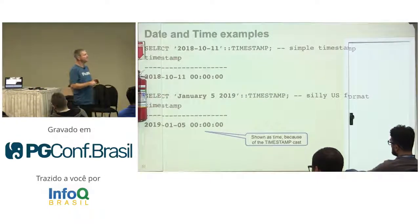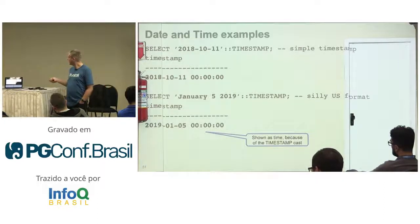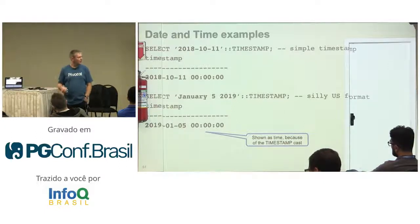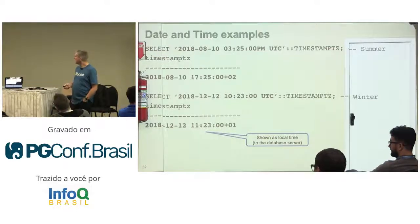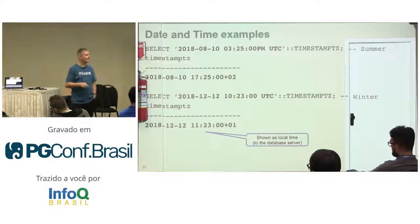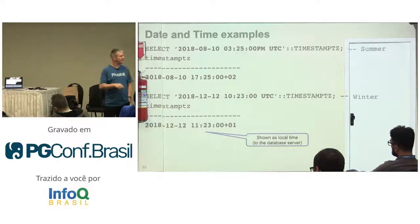Let's look at some examples. I have something that looks like a date and I cast it as a timestamp — we get back a timestamp with midnight, because Postgres automatically sets it to midnight when no time is specified. You can also use name strings for months, days, years, and time zones, and Postgres can figure out the timestamp. Here I have a date, a time, and a time zone — I specify my time as 3:25 PM using 12-hour format and say it's UTC.